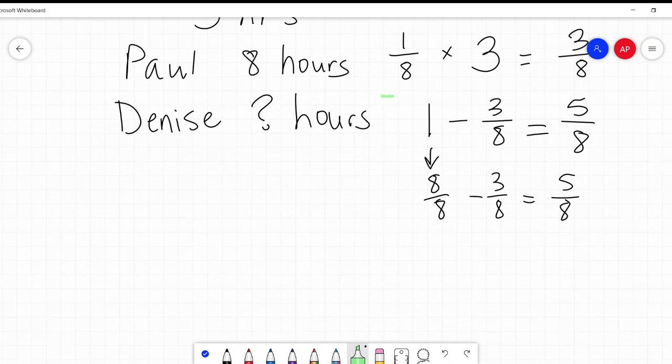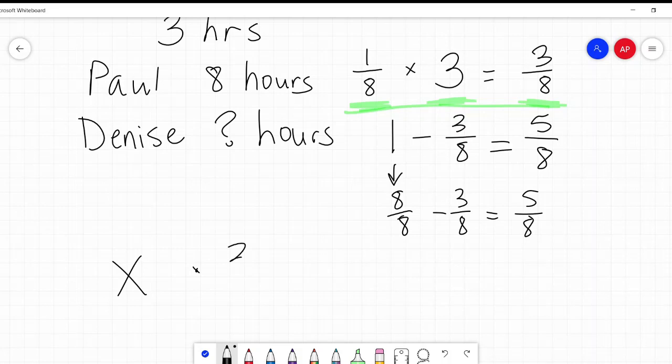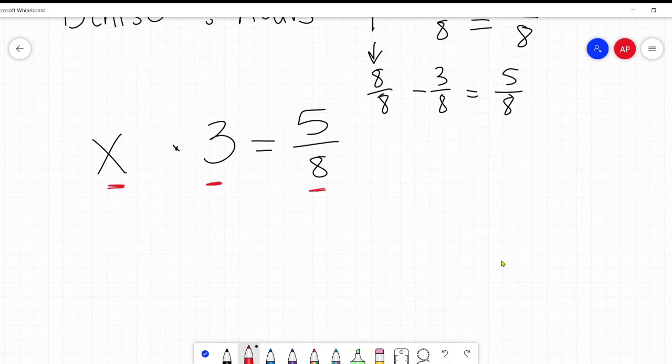So Denise completes five eighths of the task in three hours. Now look at this little pattern that we had up here. We said, Paul's rate of work times three hours equals the total work completed. Let me move that a little bit over. There we go. So let's do that same thing with Denise. Her rate of work, that's our unknown, times three hours equals her amount of work completed. Five eighths. Okay. Same pattern. Rate of work times the number of hours equals work completed. Same over here. Rate of work times number of hours equals work completed.